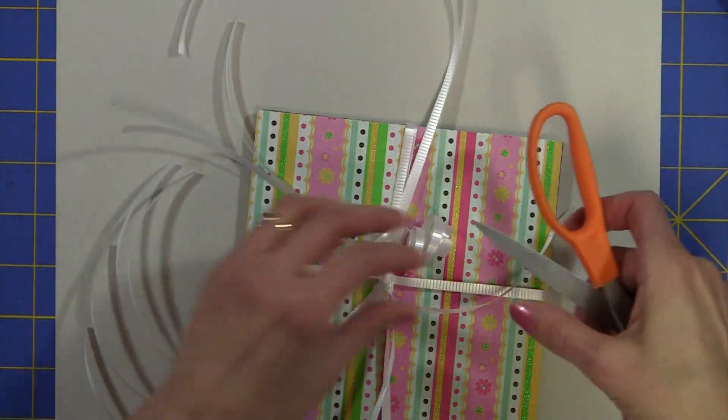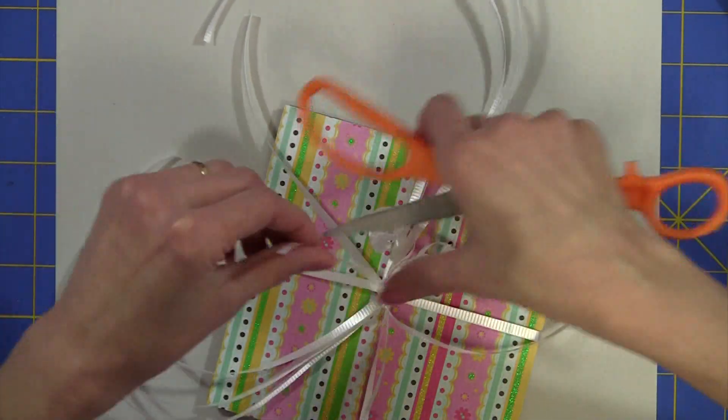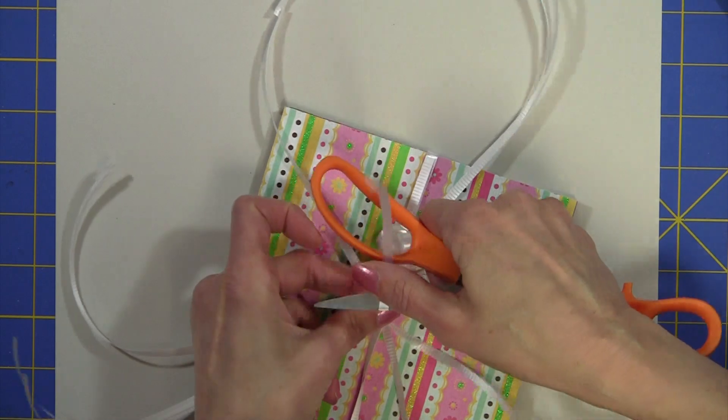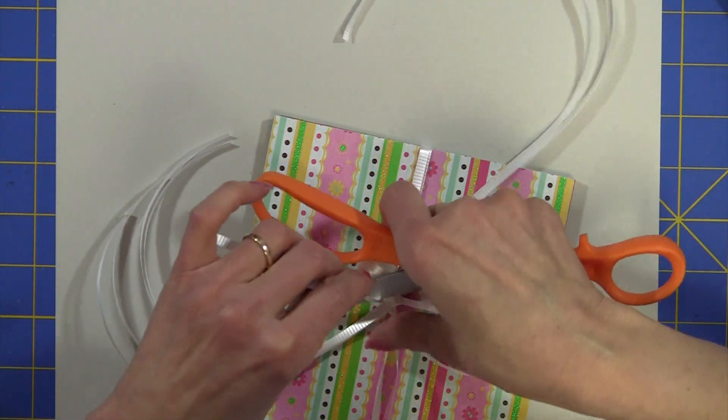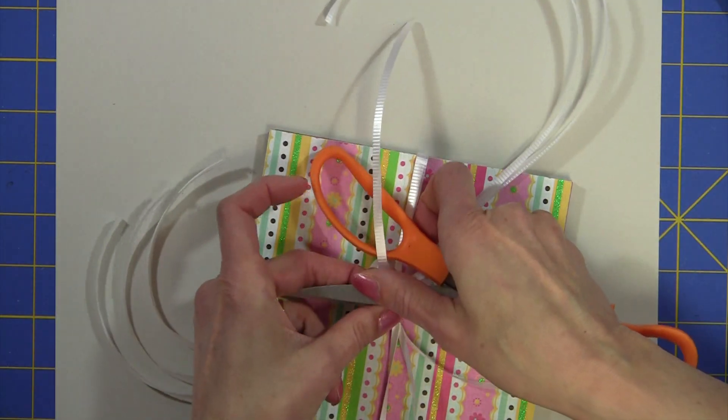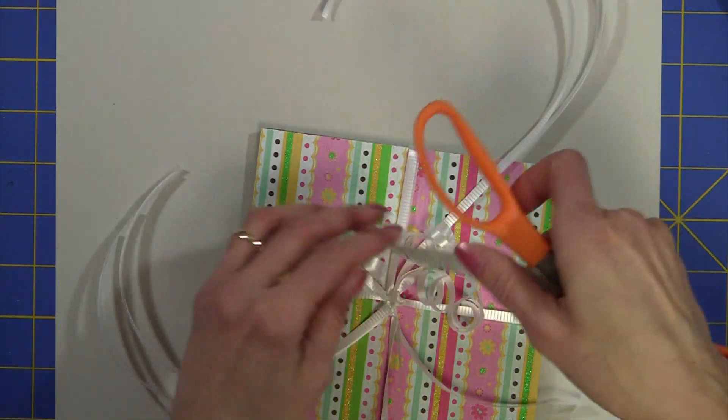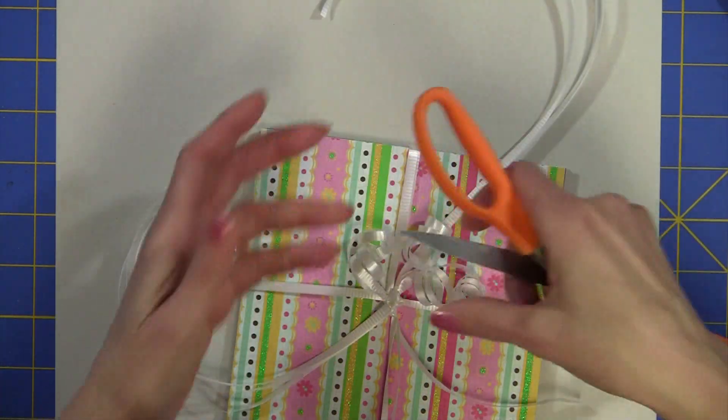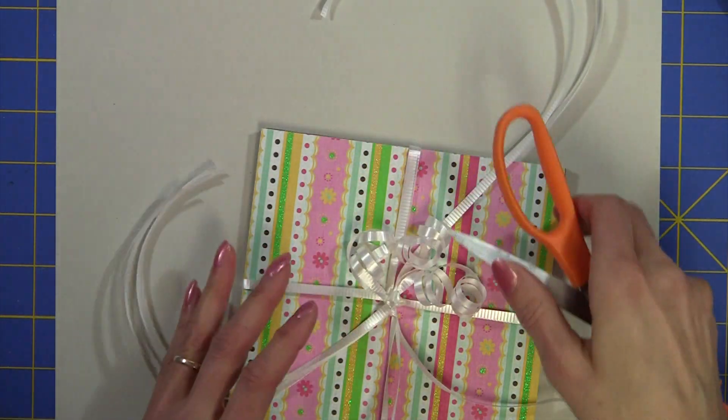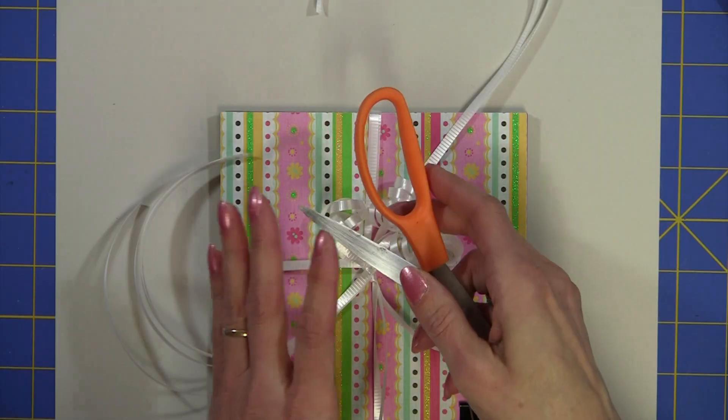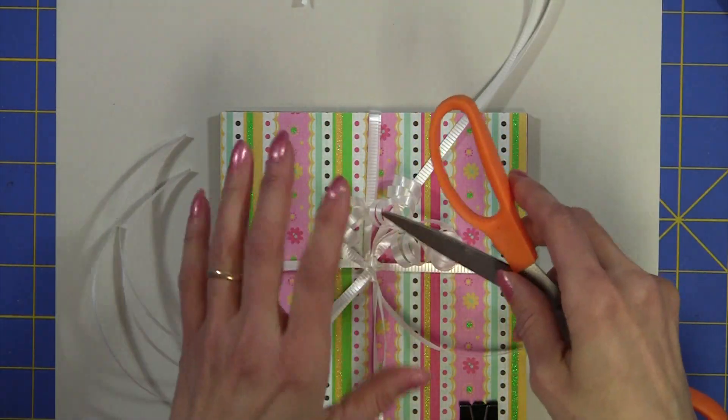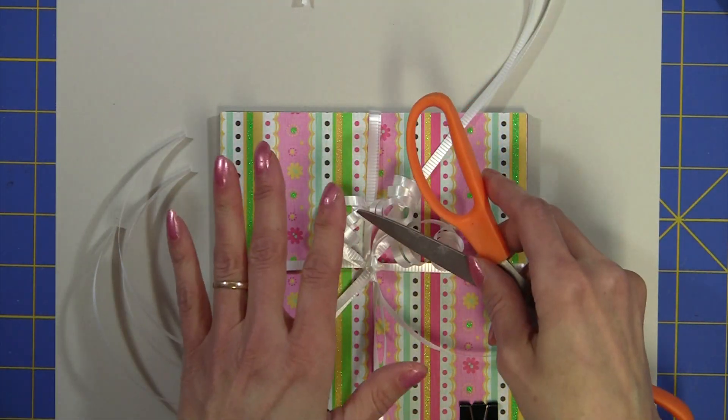If you're holding it tight against the scissors like this and pulling you'll get a tighter curl. If you hold it a little looser against the scissors you'll get a looser curl. I'm not going to have you watch me do all of the curls I'll go ahead and just curl what we have here and we'll get back together in a minute.